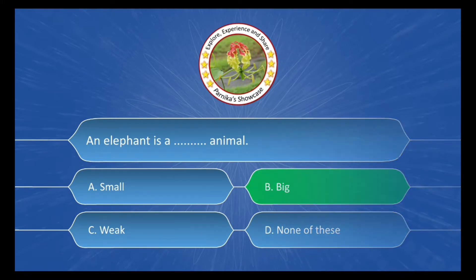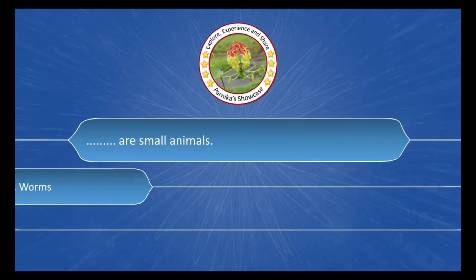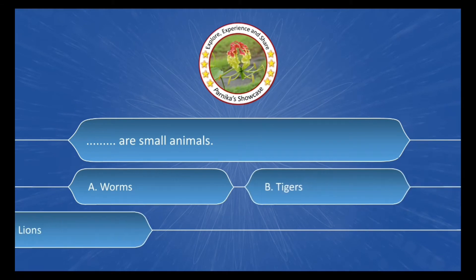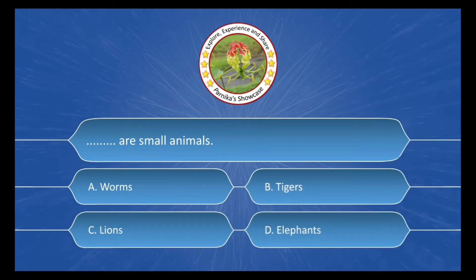___ are small animals, and the options are: A. Worms, B. Tigers, C. Lions, D. Elephants. And the correct answer is option A. Worms.